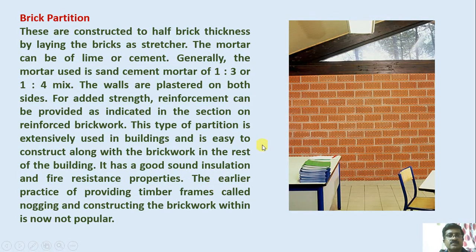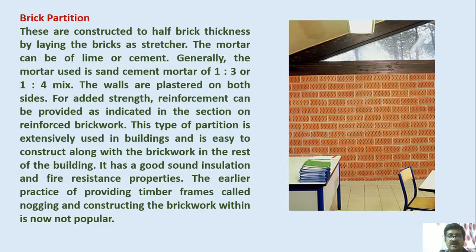Let us see regarding brick partitions. Bricks can be of various types which are used for temporary partitions. These are constructed to half brick thickness by laying the bricks as the structure. The mortar can be lime or cement — generally a sand cement mortar of 1:3 or 1:4 mix is used. The walls are plastered on both sides, or sometimes kept exposed for decorative purpose. For added strength, reinforcement can be provided as indicated in reinforced brickwork. This type of partition is extensively used in buildings and easy to construct along with the brickwork in the rest of the building. It has good sound insulation and fire resistance properties.